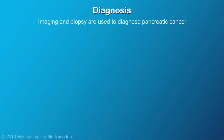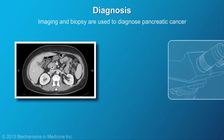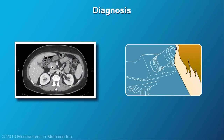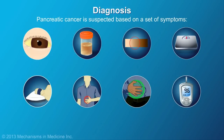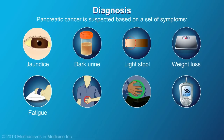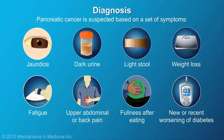Pancreatic cancer is diagnosed using imaging and biopsy, following suspicion of the disease based on a set of symptoms. These symptoms can include jaundice, dark urine, light stool, weight loss, fatigue, upper abdominal or back pain, fullness after eating, and new or recent worsening of diabetes.